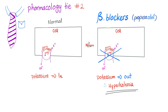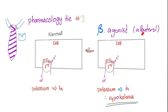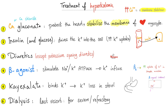Both digoxin and beta-blockers block the sodium-potassium ATPase, so both lead to hyperkalemia. Beta-agonists like albuterol boost the sodium-potassium ATPase — more potassium going in, less potassium in the blood — hypokalemia. That's why you can use beta-agonists to treat hyperkalemia. When treating hyperkalemia, the first order of business is to protect the heart, because hyperkalemia can lead to arrhythmia. Stabilize the membrane with calcium.